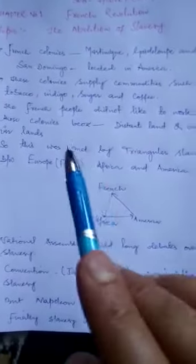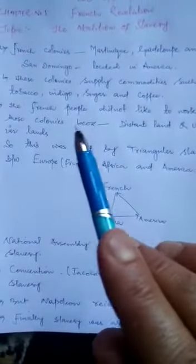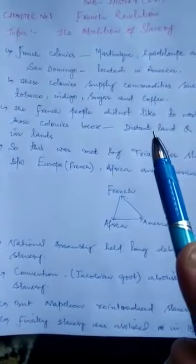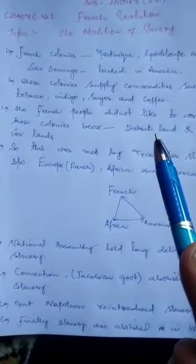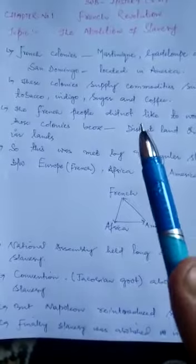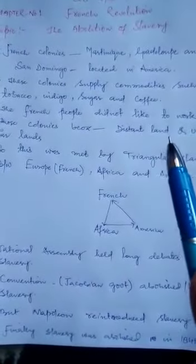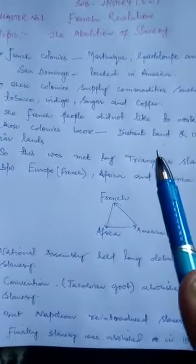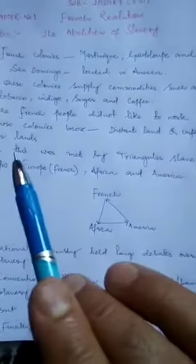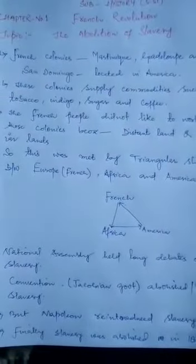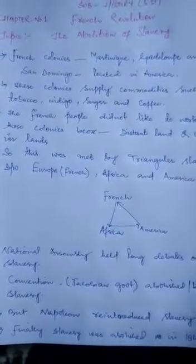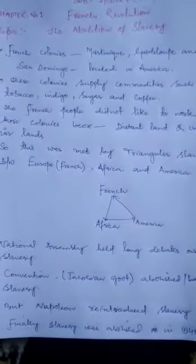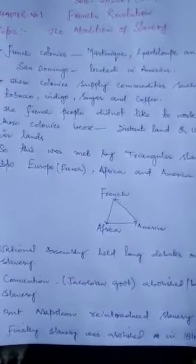جو فرنچ پیپل تھے، French people did not like to work in those colonies. اب جو فرانس کے خود کے لوگ تھے، وہ ان کالنیز میں کام کرنا نہیں چاہتے تھے. اس کے دو reasons تھے: ایک تھا distant land — یہ دور کی زمین تھی — اور دوسرا تھا unfamiliar lands. چونکہ فرنچ کے لوگ ان کالنیز سے واقف نہیں تھے.